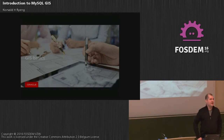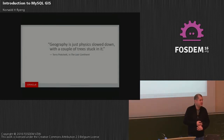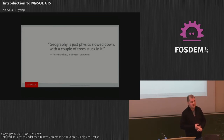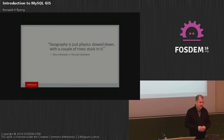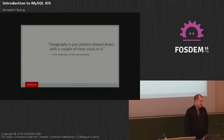GIS in databases is not really hard, at least when you have a library that does the heavy lifting. What you need is basically data types, an index so you can optimize and search fast, and functions to calculate things. As long as we're using Boost, those functions are almost free — unless you count the people actually implementing them. For me, working on the MySQL side, GIS is just a database with a couple of extras stuck in it, plus some data types.